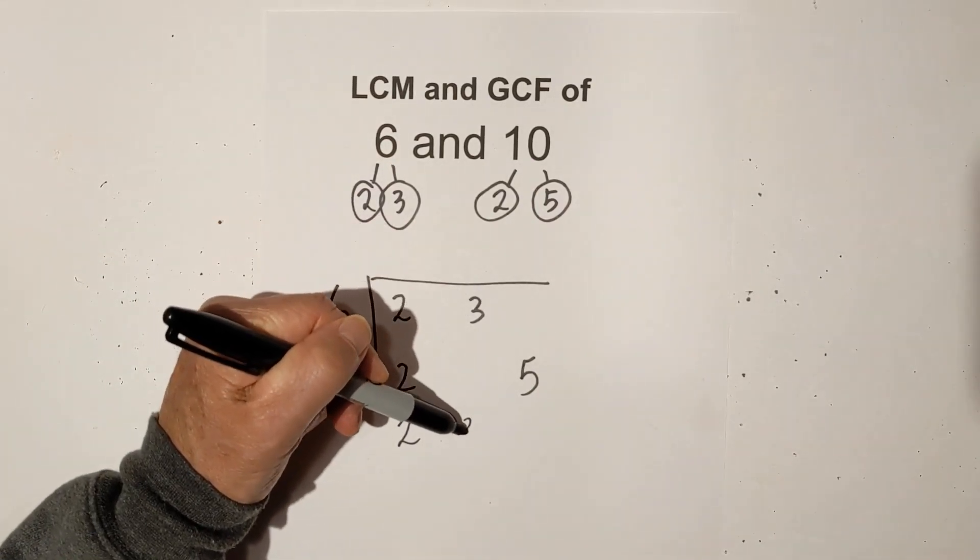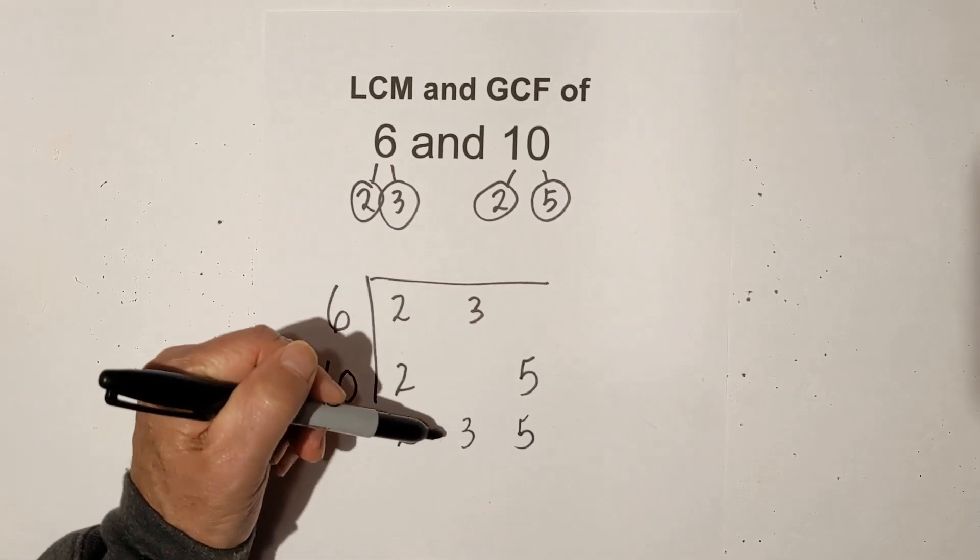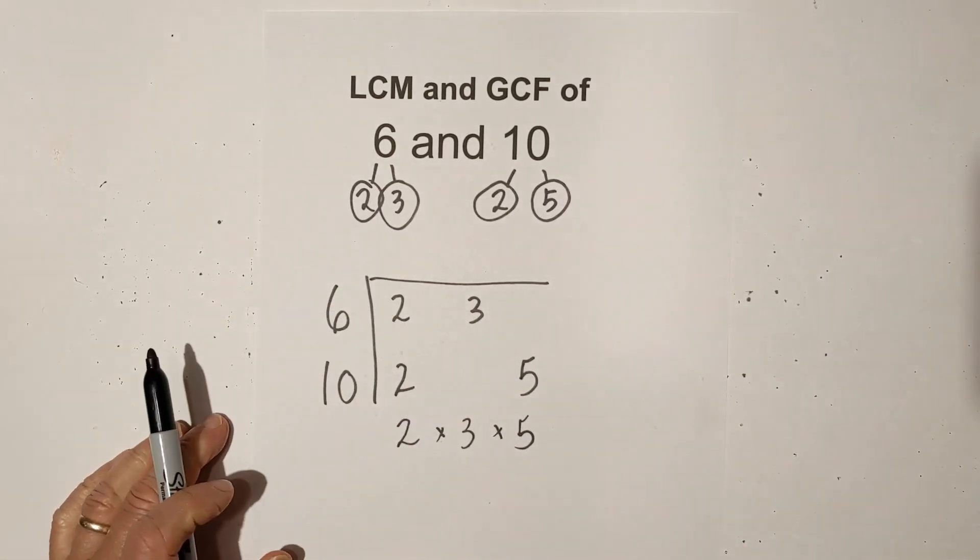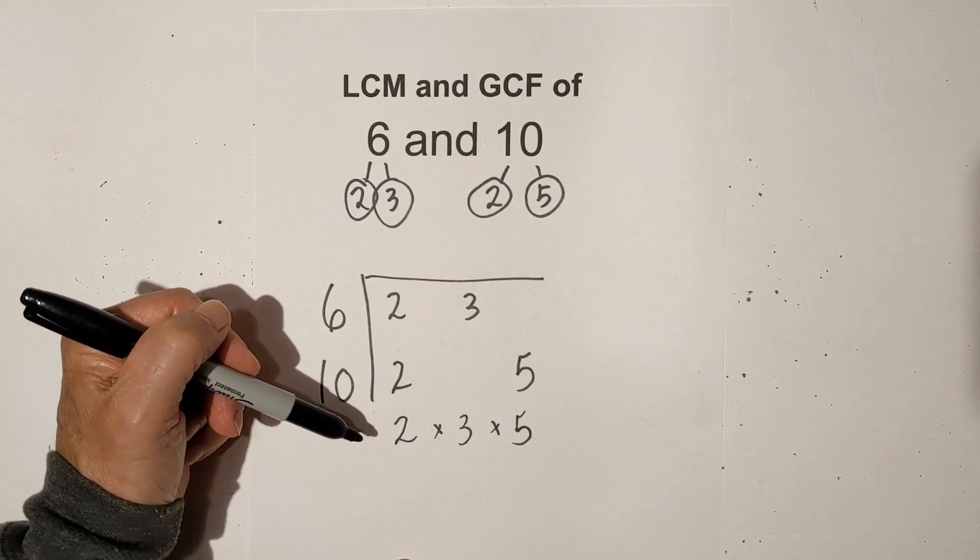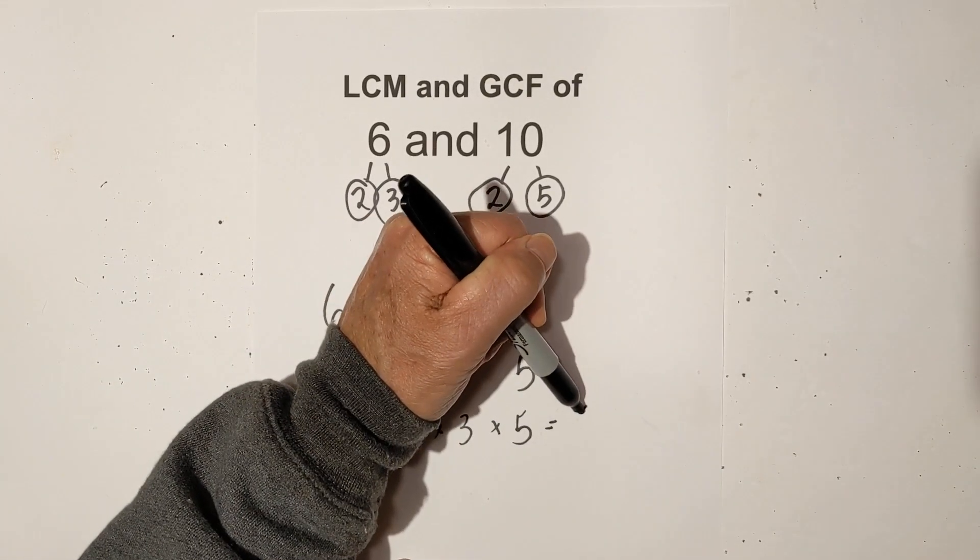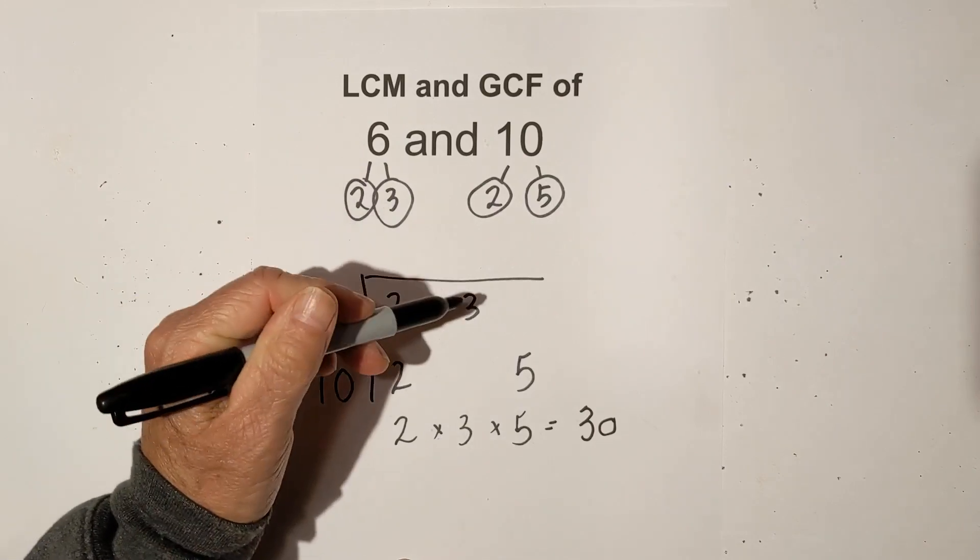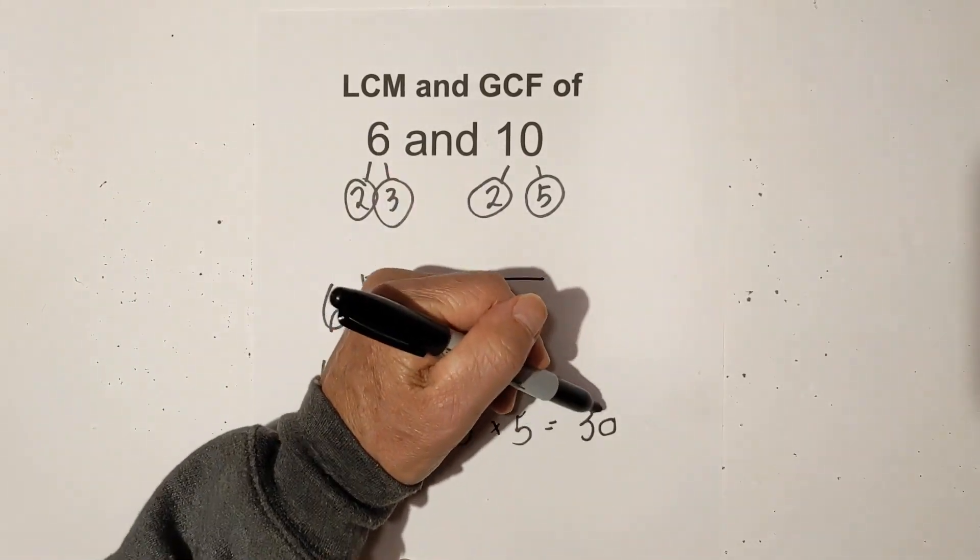So I have a 2, a 3, and a 5. I then just multiply these numbers together. 2 times 3 is 6. 6 times 5 is 30. So the LCM of 6 and 10 is 30.